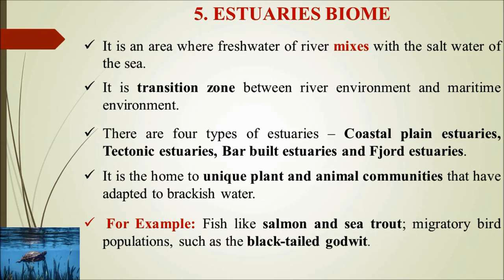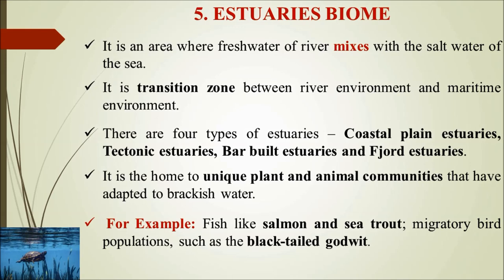Fish like salmon and sea trout, and migratory birds like the black-tailed godwit, are uniquely found in estuary biomes. We have now covered all five types of aquatic biome — with the broader categories being marine and freshwater — subdivided into five for a thorough understanding. Thank you for watching and subscribing to the Geoecologist. Keep safe, stay safe.